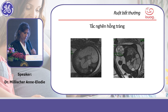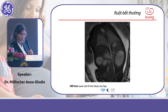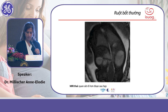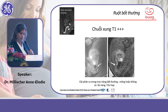Here is an example of a jejunal occlusion where you can see a markedly dilated bowel. On MRI the dilated bowel loops are very large. With cine MRI, it is easier to see the remaining bowel — the downstream post-stenosis segment just after the occlusion.